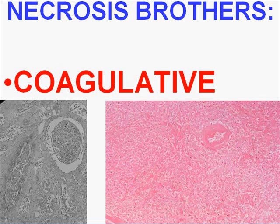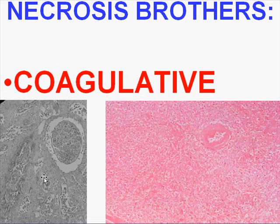In coagulative necrosis, you fail to see the outlines of cells microscopically. You usually see it in solid organs such as kidney, heart, and spleen. When you look microscopically, you might be able to recognize the tissue — for example, you might think this is a glomerulus, because it is — but you don't see any nuclei or boundaries between cells; it looks like a very poor histologic preparation. Here on this side we have splenic coagulative necrosis. With that, we have completely finished chapter one — if you're taking general pathology, you've just finished 10% of your course.